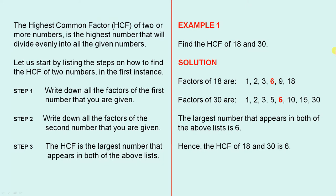The Highest Common Factor, which is shortened to HCF, of two or more numbers, is the highest number that will divide evenly into all the given numbers.